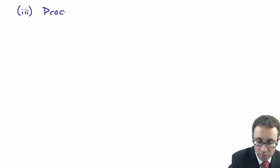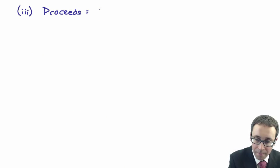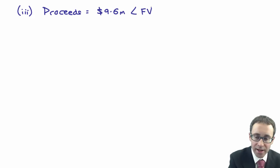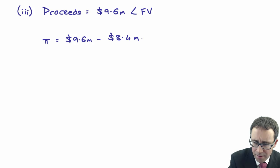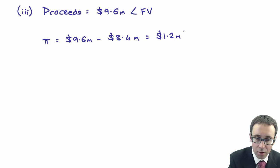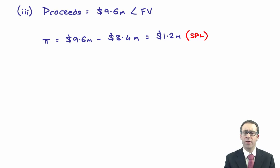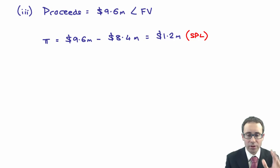Scenario 3: the proceeds are £9.6 million, which is less than fair value. You still make a profit: £9.6 million less £8.4 million gives a profit of £1.2 million, which goes immediately to the statement of profit or loss. If you make a profit when sales are below fair value, just recognize a profit as normal - there is nothing too complicated about that.